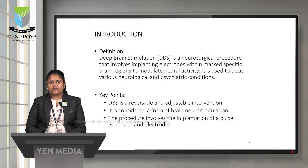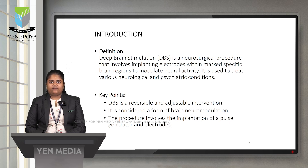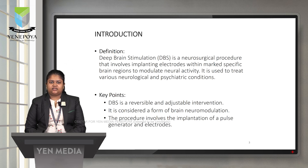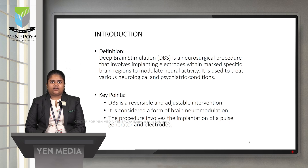The definition of Deep Brain Stimulation: it is a neurological procedure that involves implantation of electrodes within specific brain regions to modulate neural activity. It is used to treat various neurological and psychiatric conditions. Deep Brain Stimulation is reversible and adjustable. It is considered a form of neuromodulation, and the procedure involves implantation of a pulse generator and an electrode.